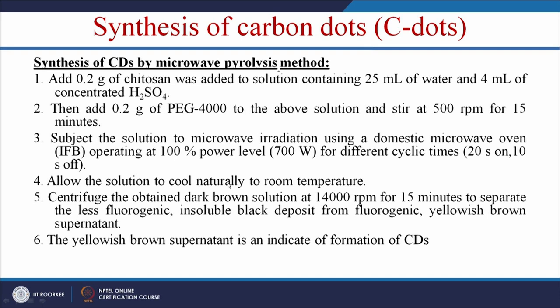Allow the solution to cool naturally to room temperature. Then centrifuge the dark brown solution at 14,000 rpm for 15 minutes to separate the less fluorogenic insoluble black deposits from the fluorogenic light brown supernatant. This light brown supernatant is an indicator of formation of carbon dots. Using this simple protocol, we can make fluorescent carbon dots in the lab using a domestic microwave oven and any carbon source.